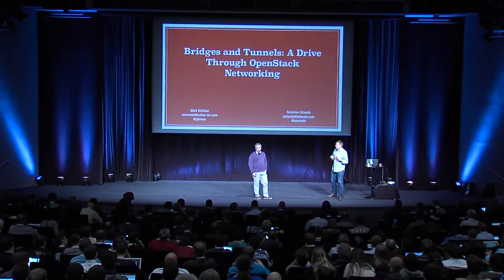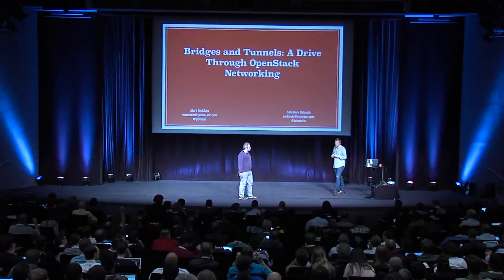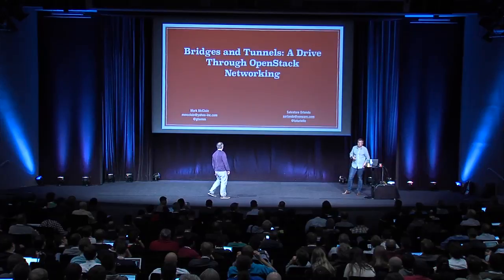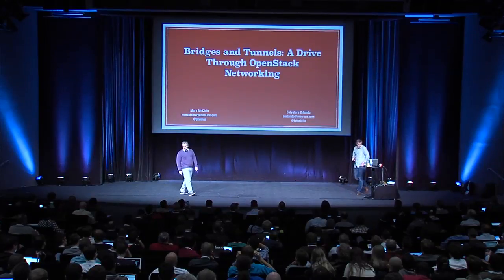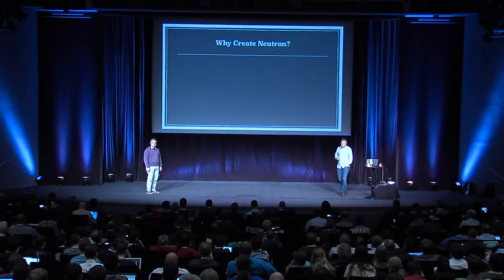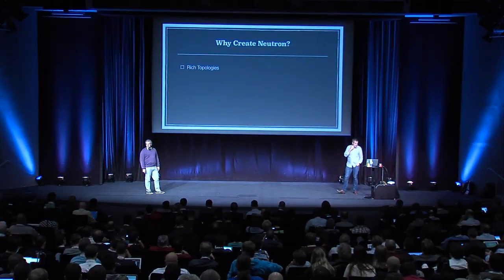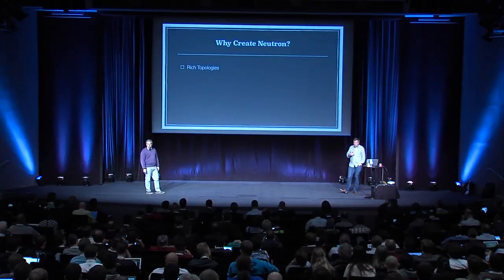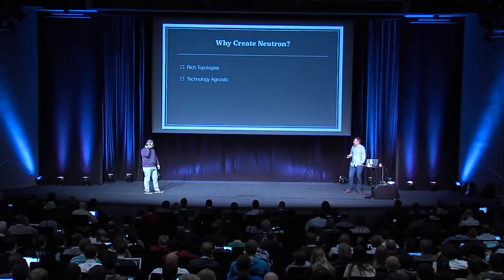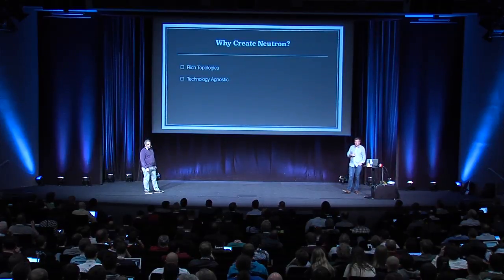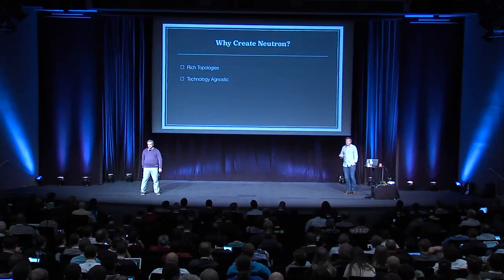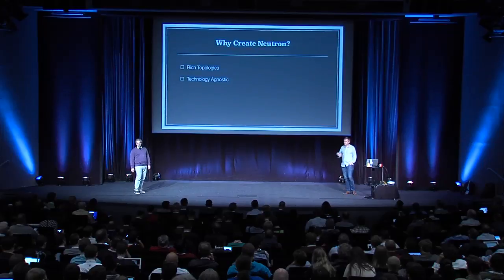We're going to give you an overview and take a tour through Neutron — what it is, how it's made up, and what the reference architecture looks like. When we first started looking at why we wanted to create Neutron, we had several things we needed to solve: the ability to create rich topologies, the ability to be technology agnostic. You don't want to be locked into a particular vendor, especially as technology changes or as you build out data centers differently.